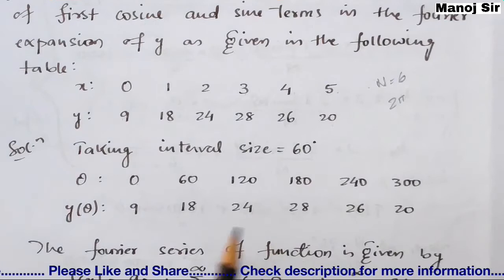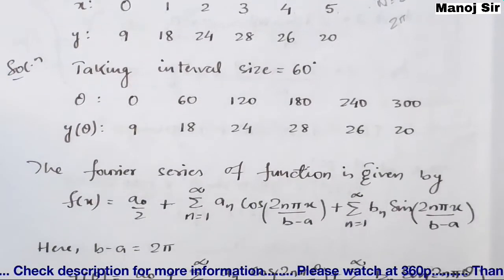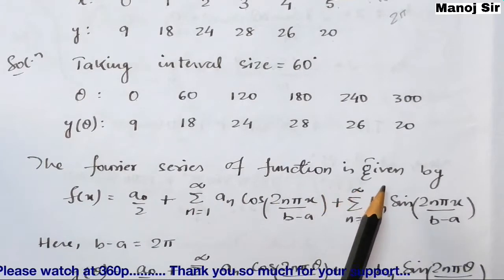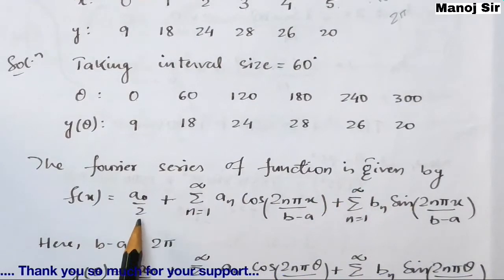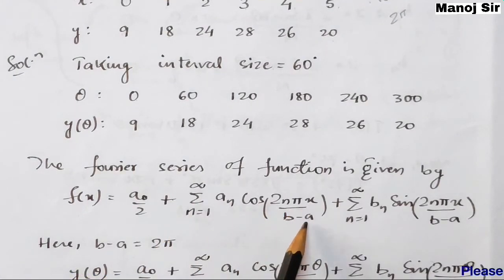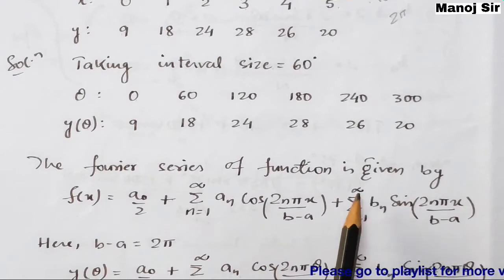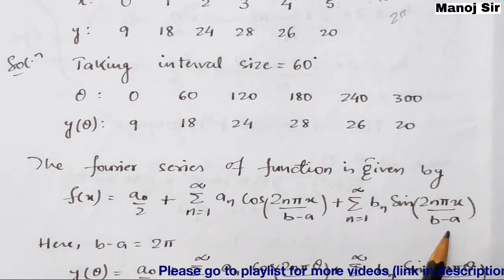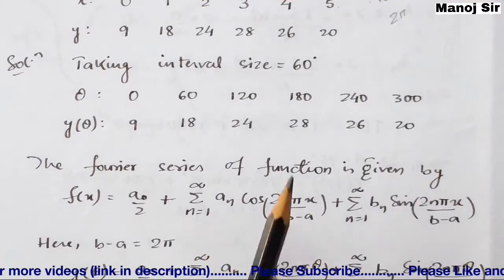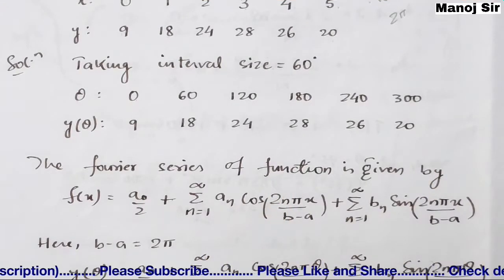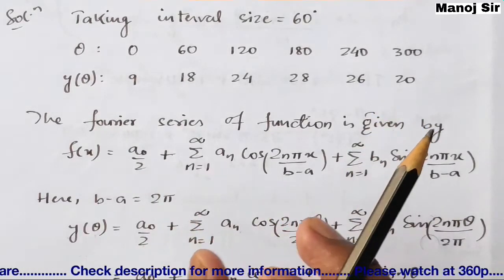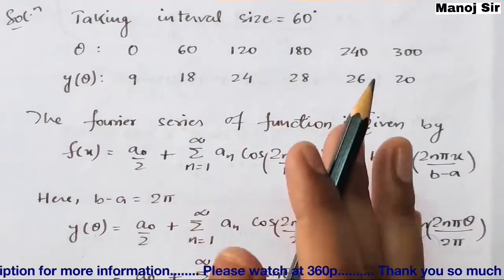The Fourier series of any function f(x) is given by: f(x) = a₀/2 + Σ aₙ cos(2nπx/(b−a)) + Σ bₙ sin(2nπx/(b−a)). Here b−a is the interval size, which is 2π. So this is the general formula for the Fourier series.